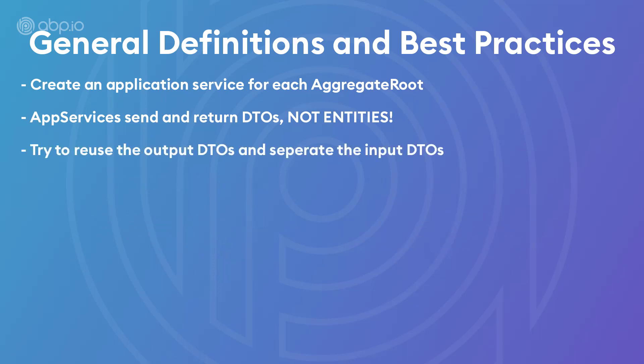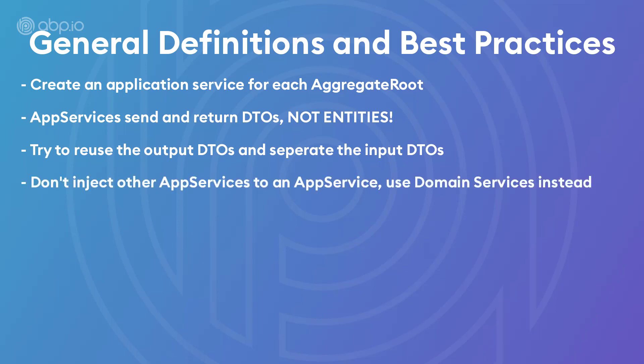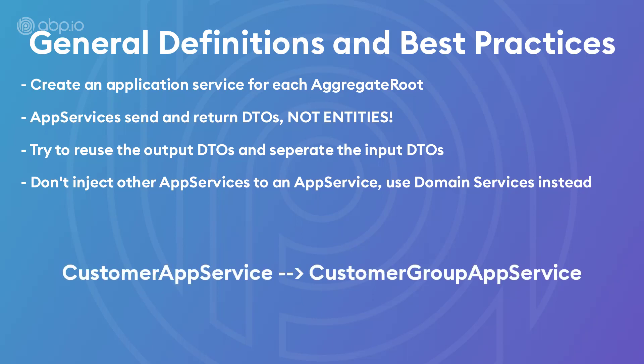Try to reuse common output DTOs, but keep input DTOs separate. And do not inject other application services into an application service — for example, do not inject the CustomerAppService into the CustomerGroupAppService. That is a big no-no. Use domain services instead.